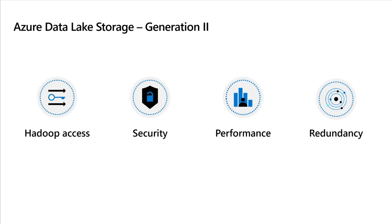Since we don't throw data anymore, we need a location that keeps on growing. Doing the same thing on-premise would be very expensive, but in Azure we have this service called Azure Data Lake. It has two generations — generation one and generation two. Generation one is getting deprecated, so we are not concerned about it, and generation two is what we use in production.